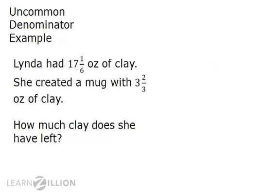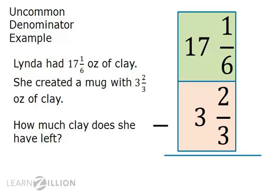Let's see how subtracting with unlike denominators works. We will need to convert the fractional parts to common denominators, regroup whole numbers into fractions if necessary, and simplify our answers using greatest common factors. In this problem, Linda had 17 and 1 sixth ounces of clay, and used 3 and 2 thirds ounces to create a mug. We will subtract to find out how much she has left. We will start by writing the problem vertically, then we will create common denominators.